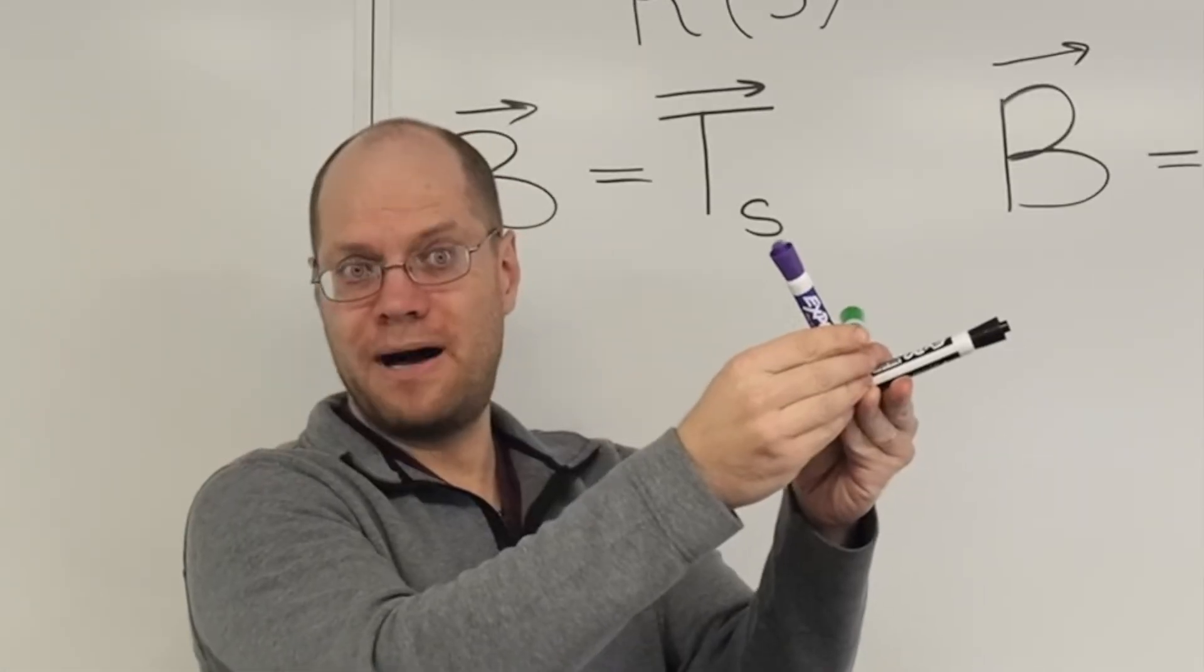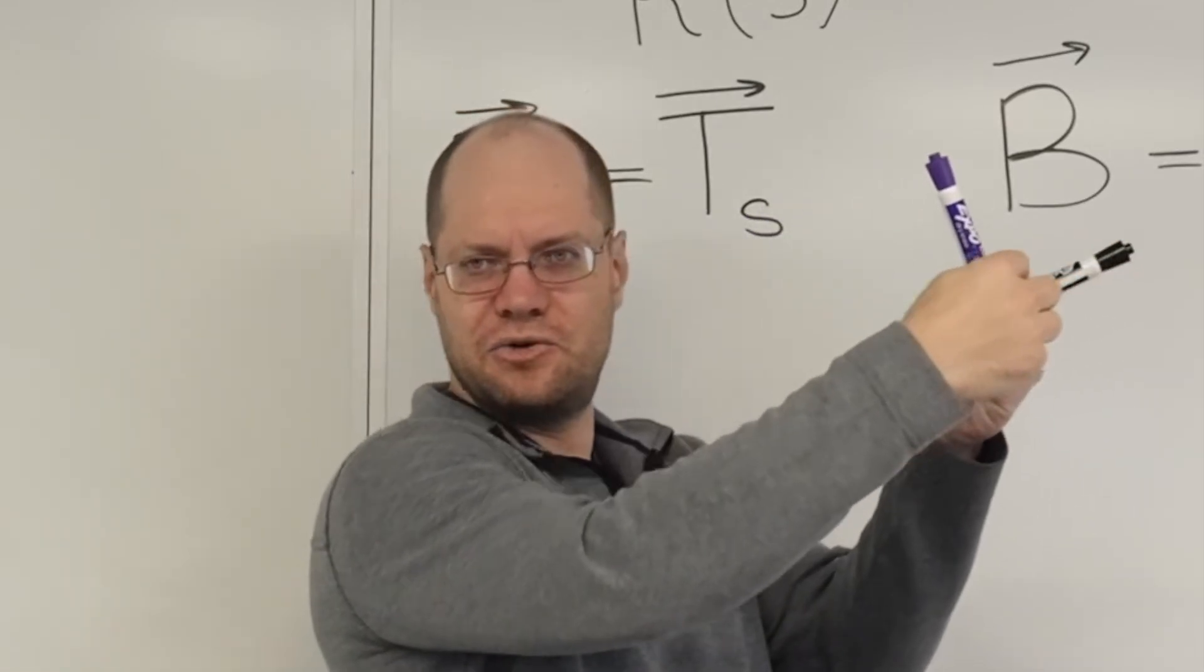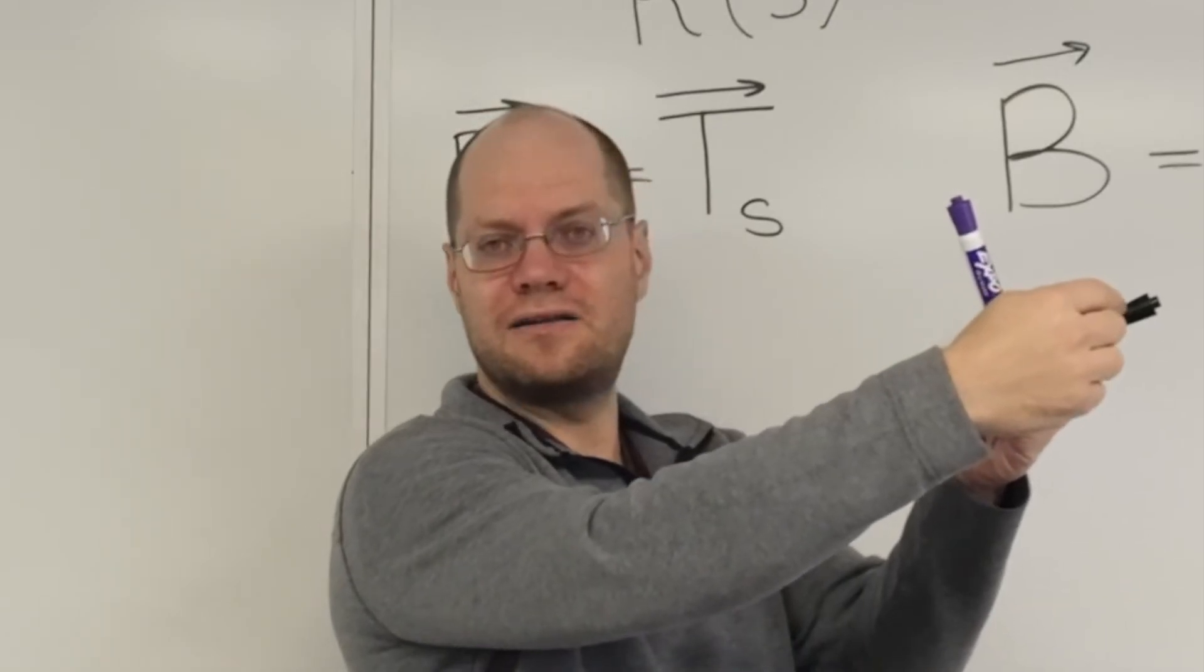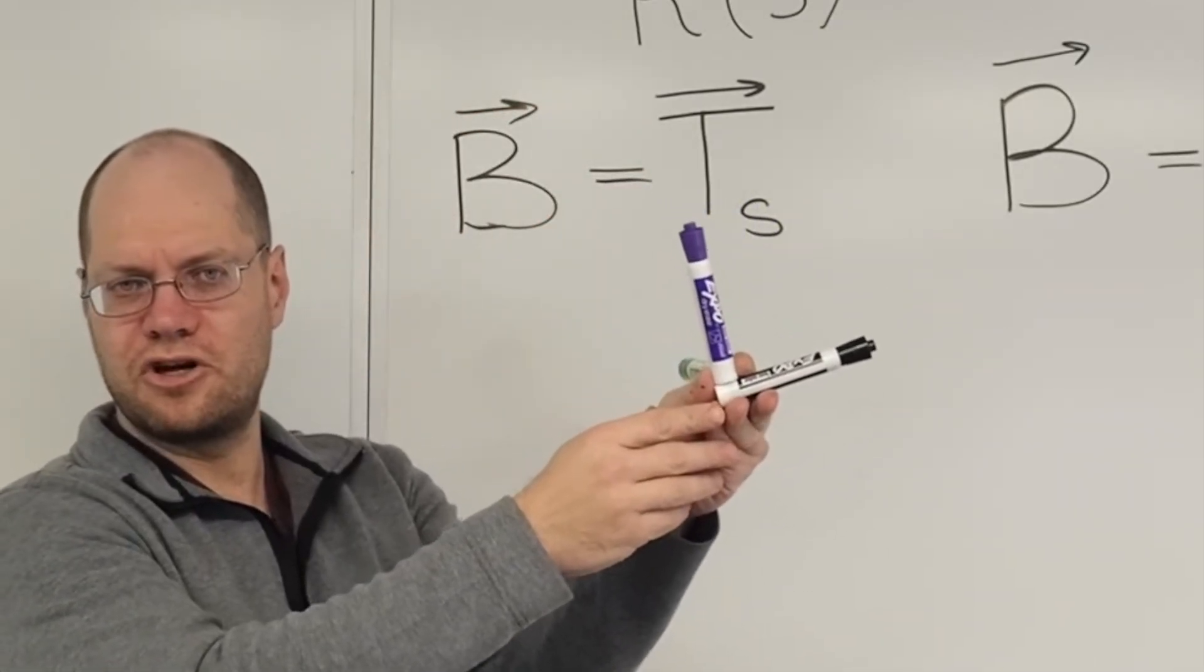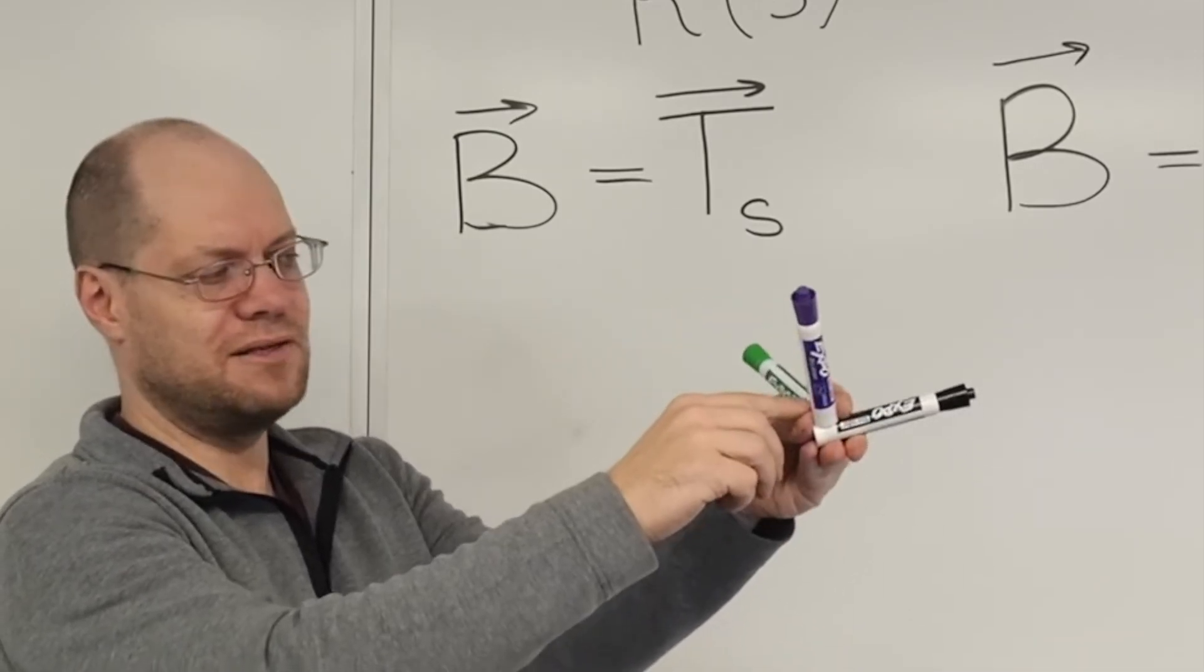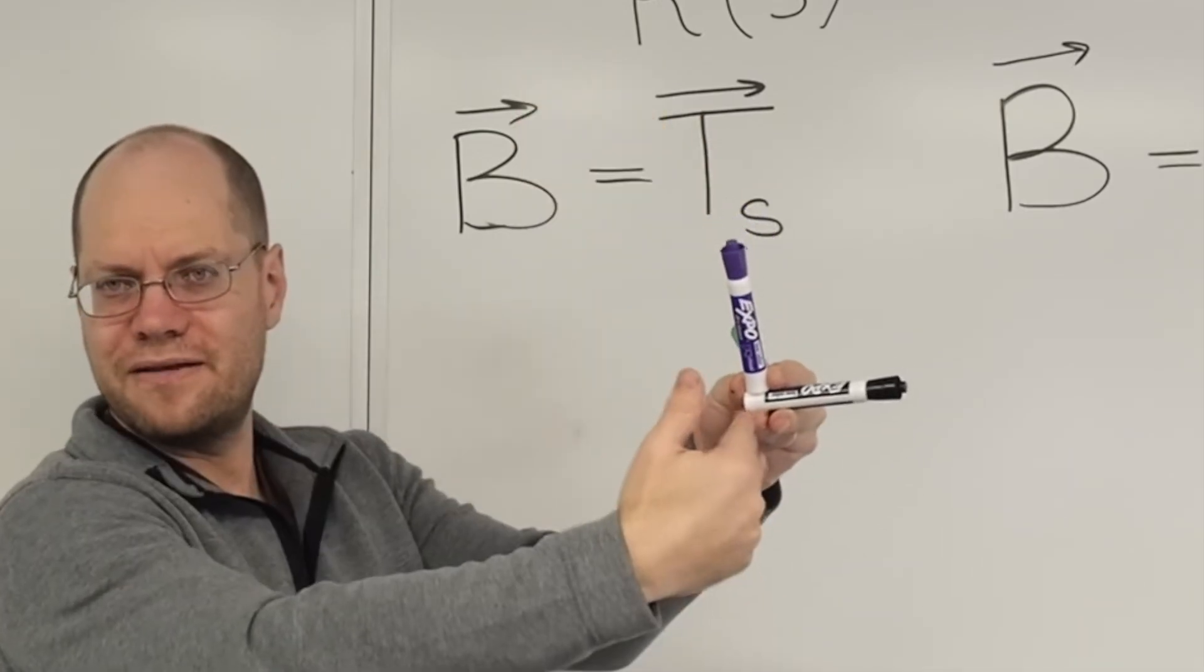Q is called the binormal because, think about it, if this is the unit tangent vector, right, because it is orthogonal to it, it also points in the direction normal to the curve. Now, this might be the principal normal direction, but this is another normal direction just because it's in that orthogonal plane. You guys are with me on that?